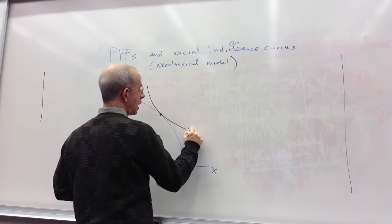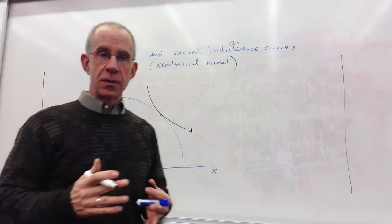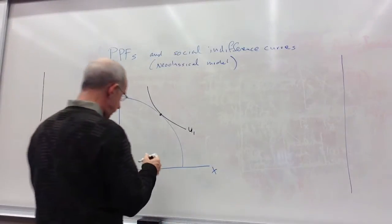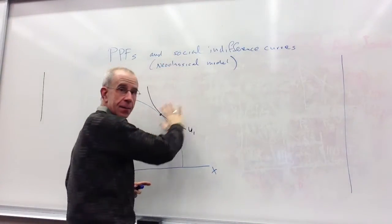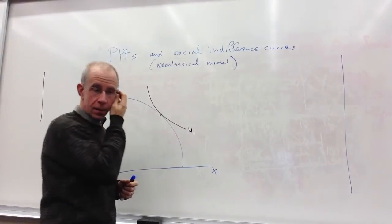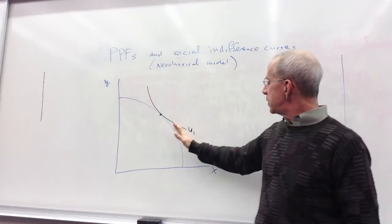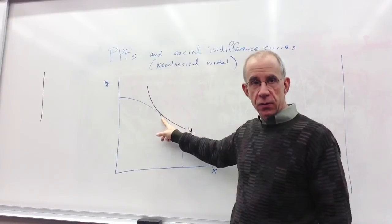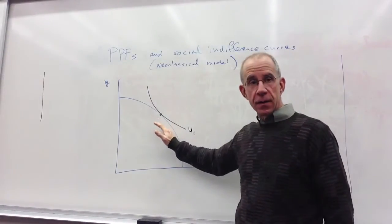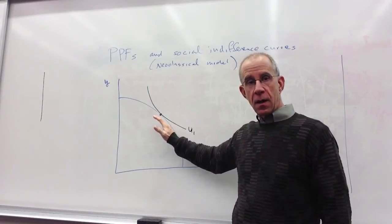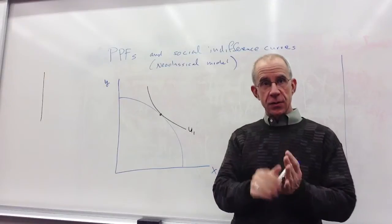So here is a social indifference curve, and I've got this tangent to the PPF. Implicitly, we've got a number of other indifference curves as social indifference curves, a whole family of indifference curves that I'm not going to draw here because it will get a bit cluttered. But what you see here, this is the highest level of social welfare, highest social indifference curve that can be reached given the resources of the economy that we're analyzing. We have this tangency where the indifference curve is tangent to the PPF.